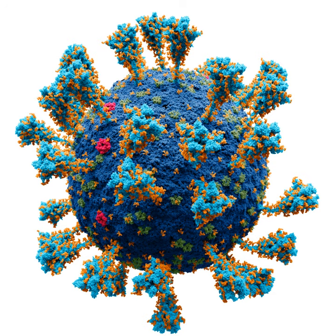Their effects are far-reaching. By increasing the amount of respiration in the oceans, viruses are indirectly responsible for reducing the amount of carbon dioxide in the atmosphere by approximately 3 gigatons of carbon per year. Marine mammals are also susceptible to viral infections. In 1988 and 2002, thousands of harbor seals were killed in Europe by phocine distemper virus. Many other viruses, including caliciviruses, herpesviruses, adenoviruses, and parvoviruses, circulate in marine mammal populations.